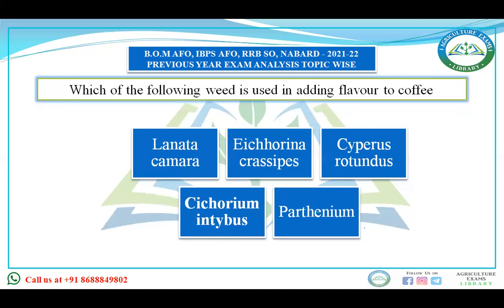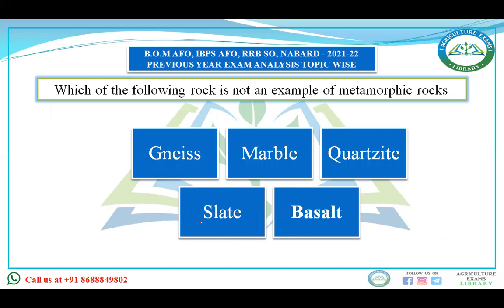Next: which of the following weeds is used in adding flavor to coffee — Lantana camara, Cyperus rotundus, Cichorium intybus, or Parthenium? The weed associated with coffee is Cichorium intybus, of the family Asteraceae, also known as common chicory. This weed is responsible for adding flavor to coffee.